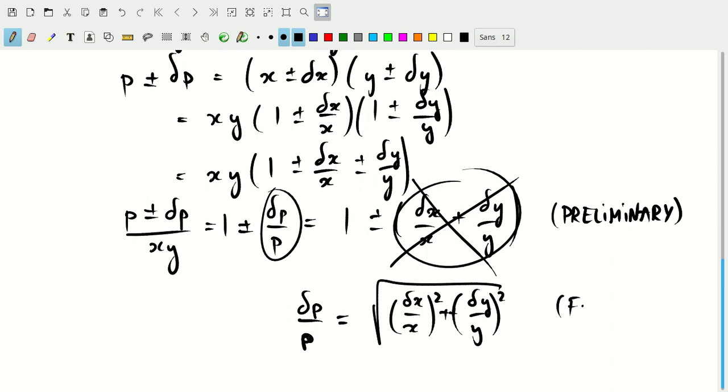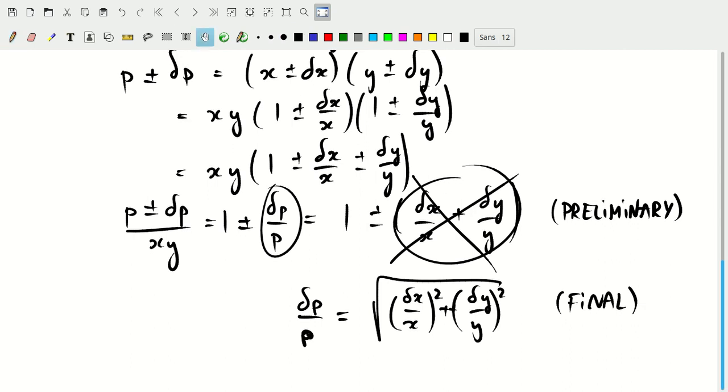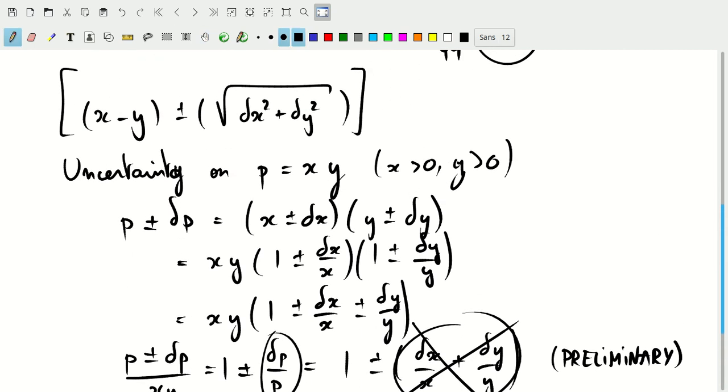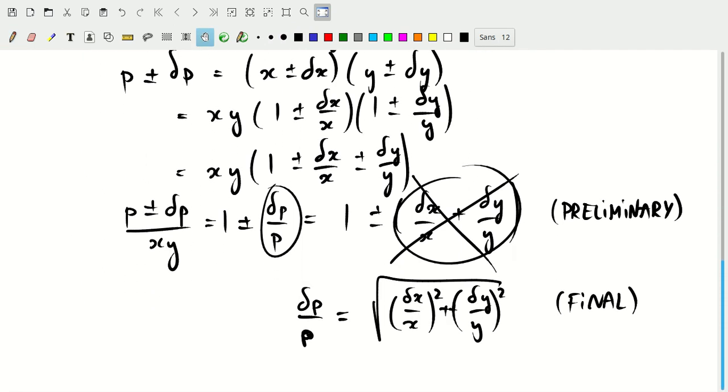This is constructed in much the same way that the expression for the absolute uncertainty of a sum or difference is constructed. But this will be something we have to come back to when we talk about Gaussian uncertainties and interpretation as a normal distribution.